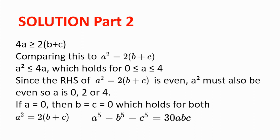Now we can reduce the number of possibilities for a by noticing that the right-hand side of a squared equals 2 multiplied by b plus c is even. So a squared must also be even. So a is 0, 2, or 4.